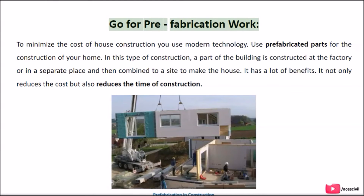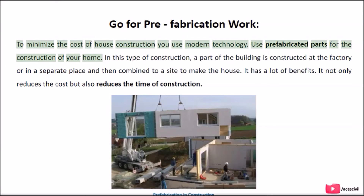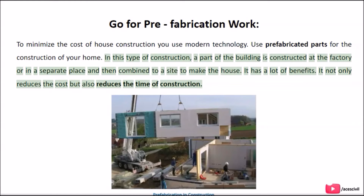The eighth tip is to go for prefabrication work. To minimize the cost of house construction, use modern technology and prefabricated parts. In this type of construction, a part of the building is constructed at the factory or in a separate place and then assembled on site to make the house. It has a lot of benefits — it not only reduces the cost but also reduces the time of construction.